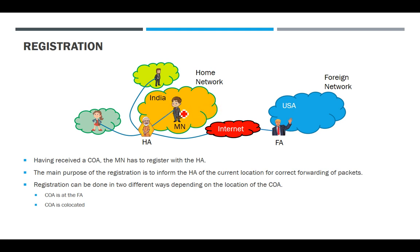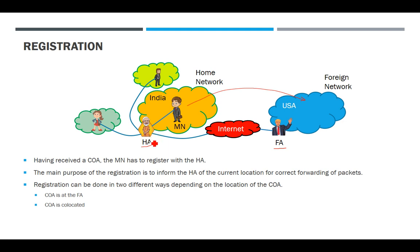Suppose you are the mobile node and you are present in the home network. At some point you move to a foreign network. How do you determine whether you are in the home network or foreign network? That is done by two methods called the agent discovery process — either the home agent or foreign agent sends an advertisement packet, and by seeing that advertisement packet you will know whether you are in your home network or foreign network.